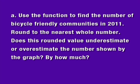Use the function to find the number of bicycle-friendly communities in 2011. Round to the nearest whole number. Does this rounded value underestimate or overestimate the number shown by the graph? By how much?